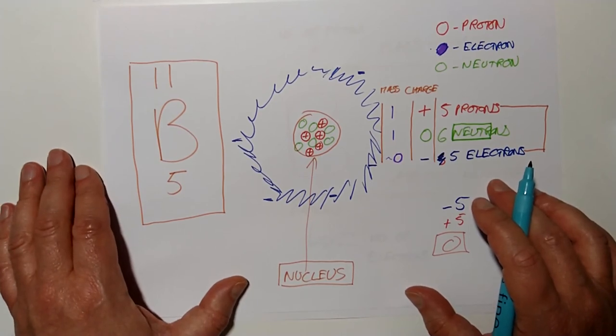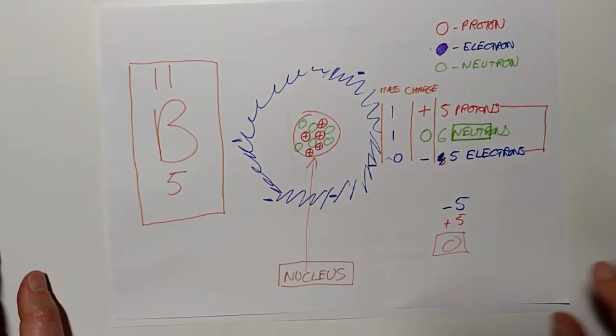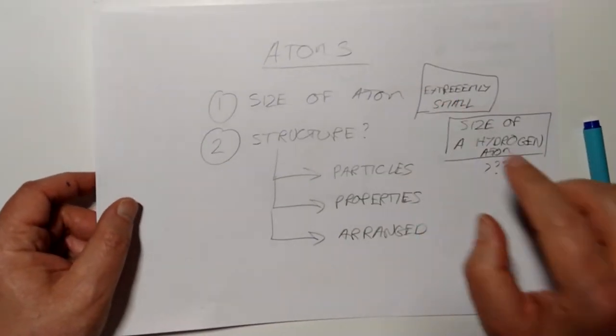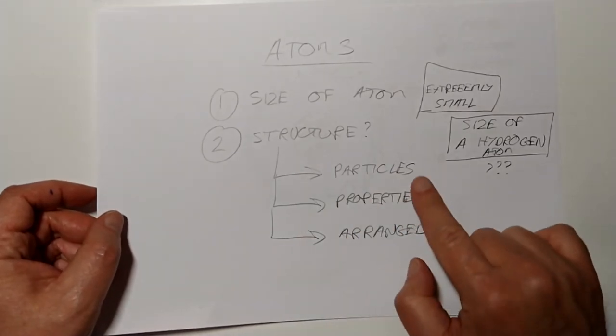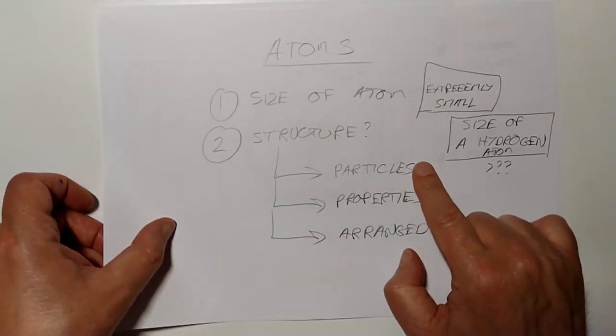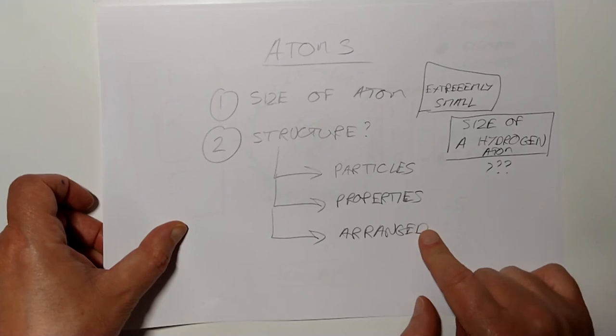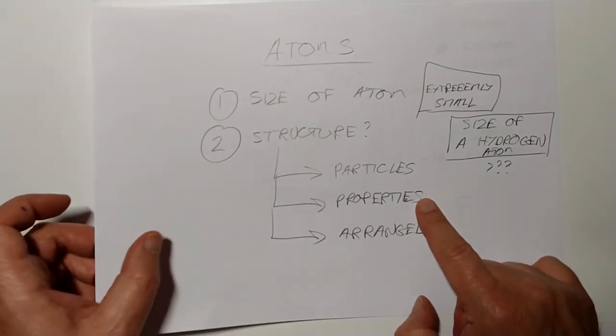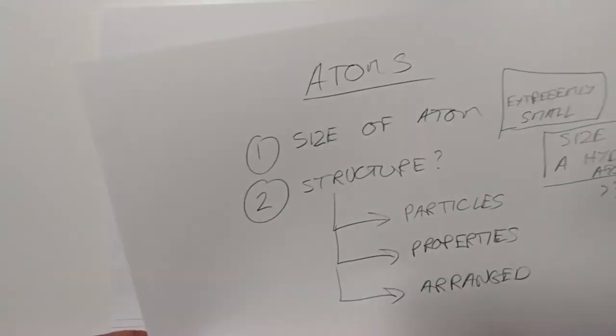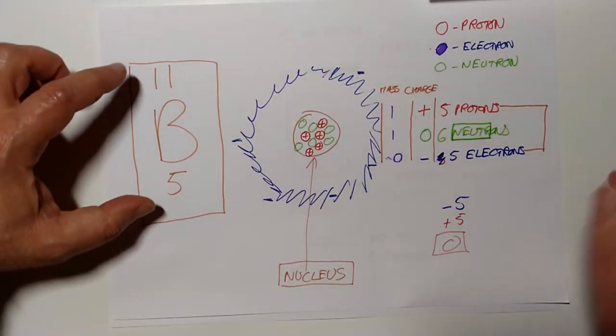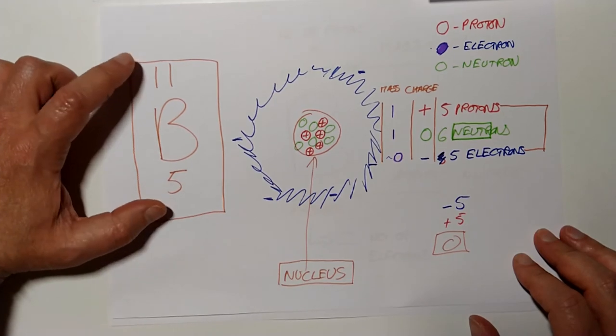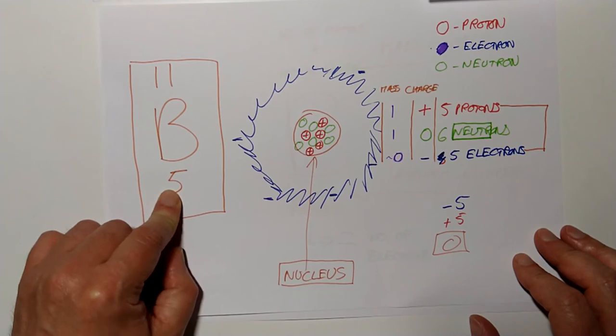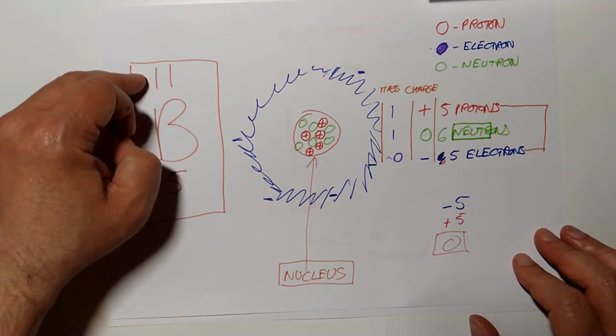So what I'm going to ask you to do, guys, the good news is that's the theory done. We covered the size of an atom, ridiculously small. The structure of an atom, we looked at the particles: protons, neutrons, electrons. We looked at where you find these particles, and we looked at the properties of them. We looked at the charge and the weight. And the last thing is this coding here. This is a code on how to look at a symbol of an element and to figure out the number of protons and the number of neutrons plus the protons.